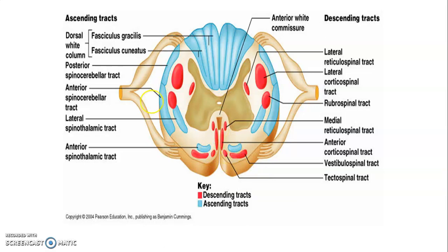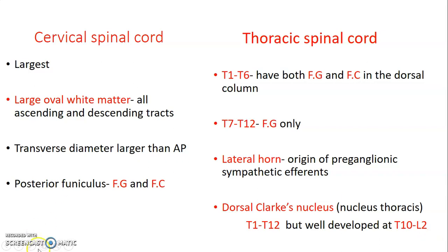Regionally, the cervical spinal cord is the largest, with a large oval white matter, because it carries ascending and descending fibers for all parts of the body. The transverse diameter is larger than the anteroposterior diameter. The posterior columns show both fasciculus gracilis and fasciculus cuneatus in the cervical region.